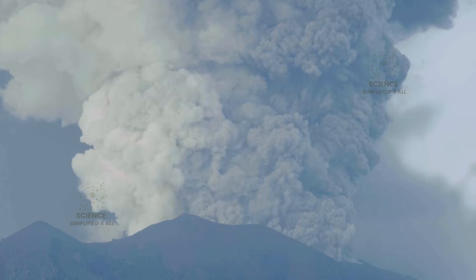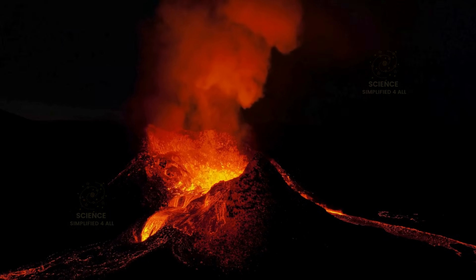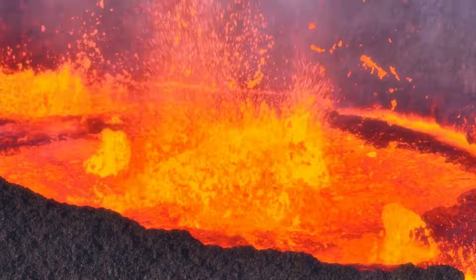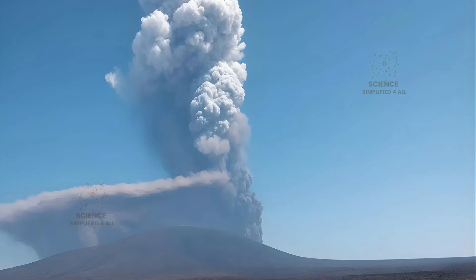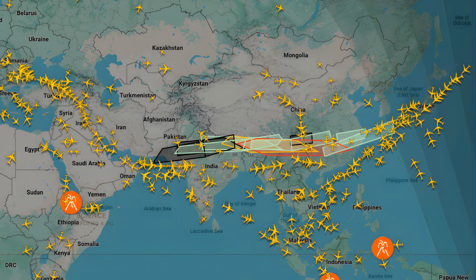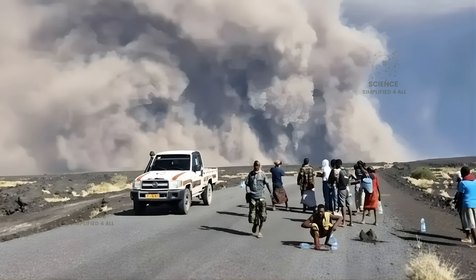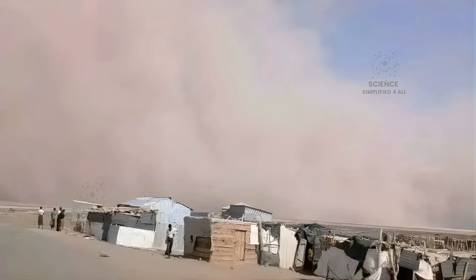When the magma contains a high proportion of silica, ash formation becomes more likely. But when it contains mostly basalt, the eruption tends to produce less ash and more fluid lava flows. During the recent eruption at Haile Gubi, the ash cloud reportedly reached an altitude of around 15 kilometers. Carried by high-altitude winds, it later drifted over Yemen, Oman, Pakistan, and India, eventually reaching China. Air traffic along those routes had to be temporarily suspended. Experts say that because the cloud moved at such a high altitude, it did not cause major problems for people on the ground. However, a thin layer of ash has settled in villages near Haile Gubi, creating difficulties for both the residents and their livestock.